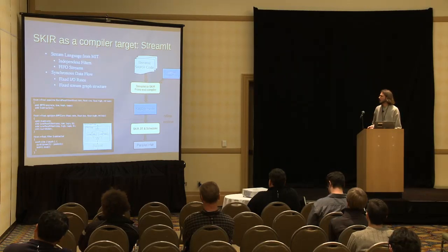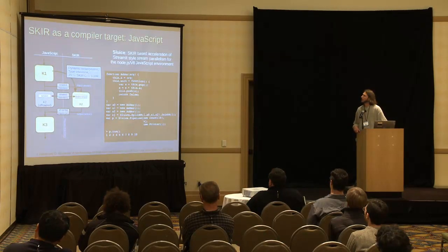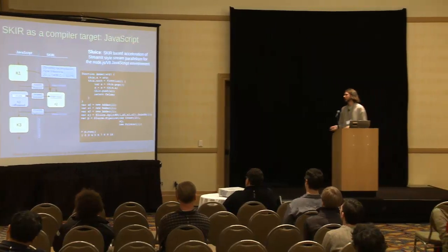We also have a front end for the StreamIt language, a research language at MIT that lets you statically describe stream graphs in the synchronous data flow model. Pretty standard compiler flow: a front end compiler emits our SKIR bitcode, and we JIT and schedule that at runtime. We also have a JavaScript front end, which demonstrates the use of this as an embedded domain-specific language with StreamIt-style program construction. The stream parallel model restricts the program enough that we can run type inference on the JavaScript, get native code out the backend, and offload that to the SKIR runtime via an RPC interface supporting shared memory streams and state. That has really good results just because JavaScript is so slow. This is implemented as an extension to V8 and Node.